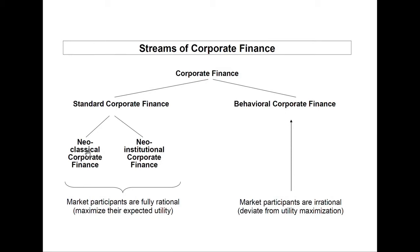In spite of these problems, the neoclassical corporate finance framework is very important, because it builds a sound foundation on which to develop more elaborated corporate finance models. As the neoclassical assumptions strongly deviate from reality, researchers in finance in a first step added a second stream of corporate finance, namely neo-institutional corporate finance. In this stream, you relieve the assumption of a perfect capital market. Therefore, this stream includes corporate finance models that allow, for instance, transaction costs, taxes, or asymmetric information.